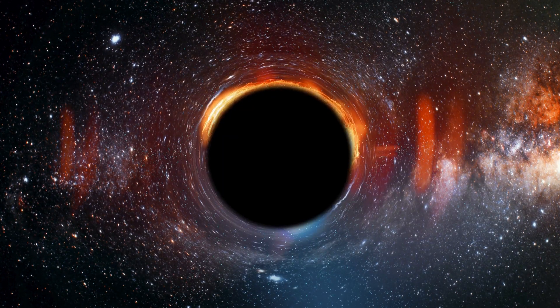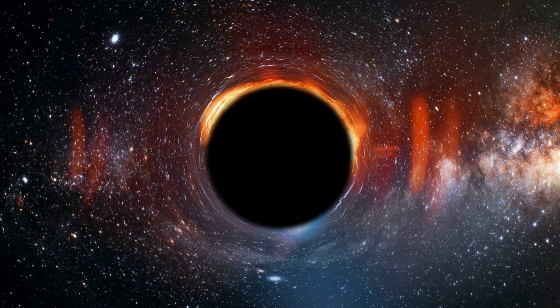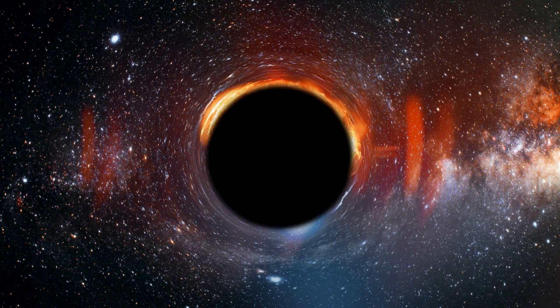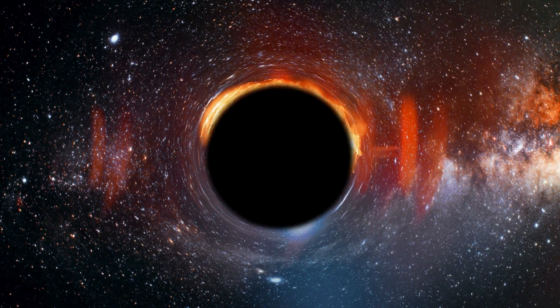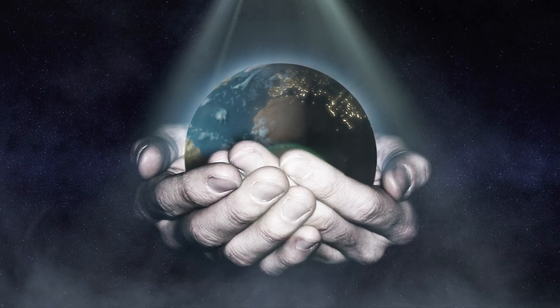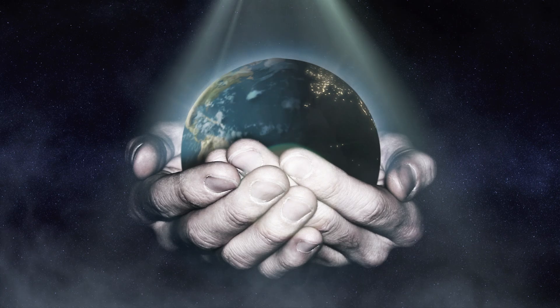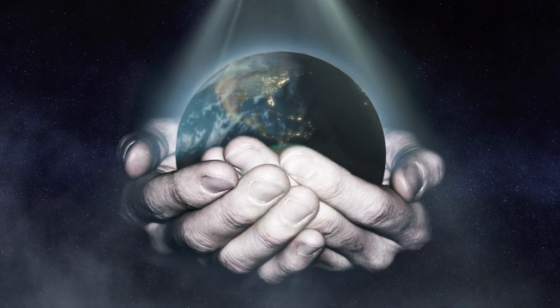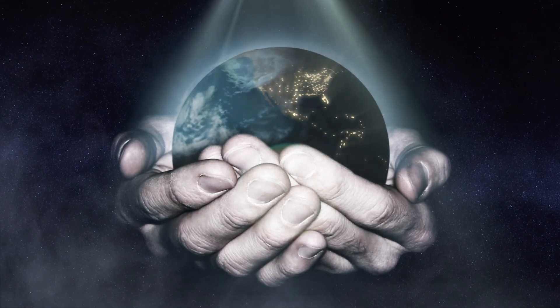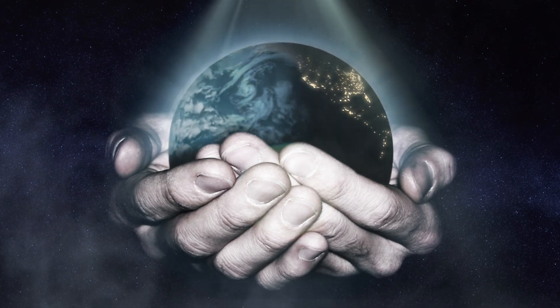In other words, the information about everything that falls into a black hole could be encoded on its event horizon, similar to how a hologram works. This idea has profound implications, suggesting that our three-dimensional world could be a projection of information stored on a two-dimensional boundary.